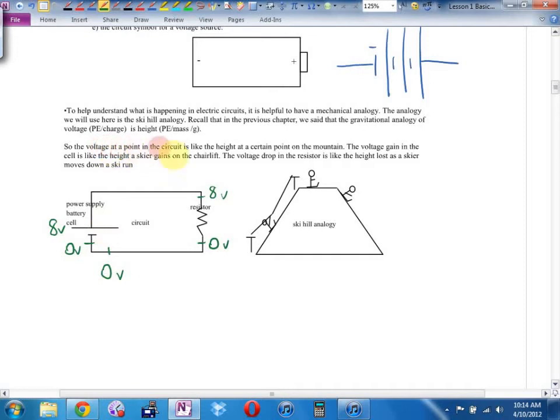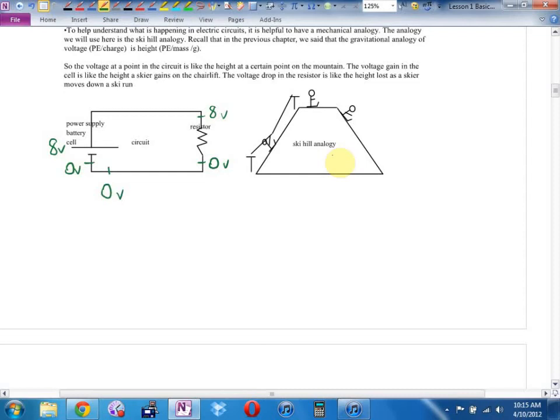The voltage at a point in the circuit is like the height at a certain point on the mountain. The voltage gain in the cell is like the height a skier gains on the chairlift. The voltage drop when you go through a resistor is like going down the ski hill so you end up back at the ground. Does that make sense? So ready, Connor? We're going to solve our first circuit. Don't write this down. That's the symbol for resistor. If this is a nine-volt battery and you measure that the voltage drop right here is six volts, what must the voltage drop through here be if you're starting at nine volts and want to end up back at ground level? It's got to be three volts.